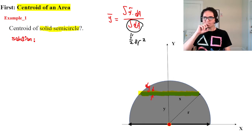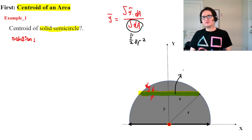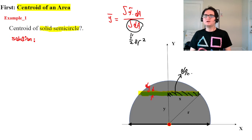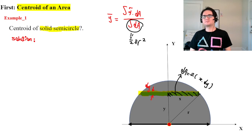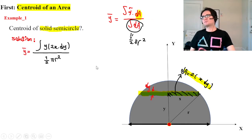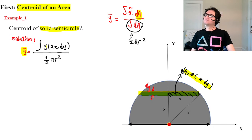The area of a semicircle is equal to one-half of pi r squared. Our element area is dA equal to 2x dy. Substituting into the centroid formula, y-bar is equal to the integration of y times 2x dy.